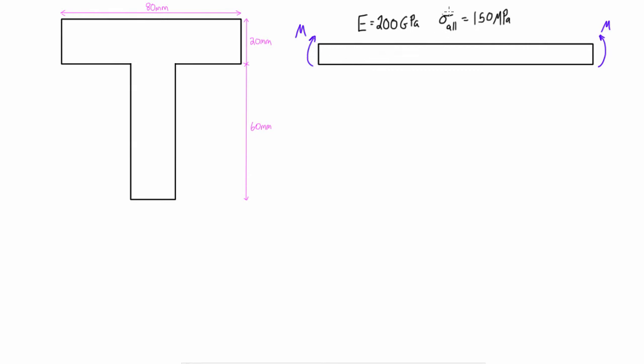What that basically means is what's the maximum moment we can apply in pure bending, and then after that we want to figure out our radius of curvature. To get started, we need to find the moment of inertia of this T-shape. We've actually found the moment of inertia of this T-shape in a previous video. If you want to go ahead and click up here, you can find the full ten-minute video.